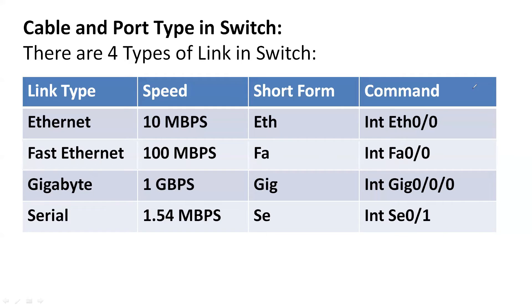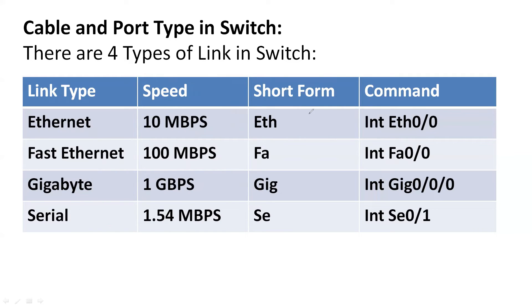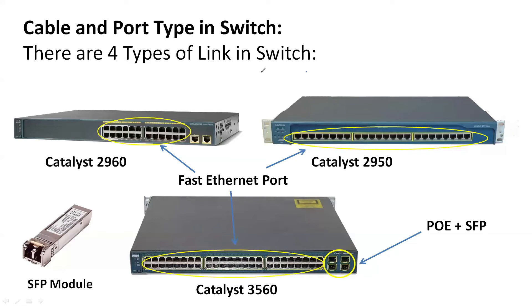There are various types of cables and ports available in the switch: Ethernet, Fast Ethernet, Gigabit, and Serial ports, with speeds of 10 Mbps, 100 Mbps, 1 Gbps, and 1.54 Mbps respectively. The short forms are: eth for Ethernet, fa for Fast Ethernet, gig for Gigabit, and se for Serial. To select interfaces in configuration, use commands like interface fa0/0, gig0/0, or se0/1 as appropriate.